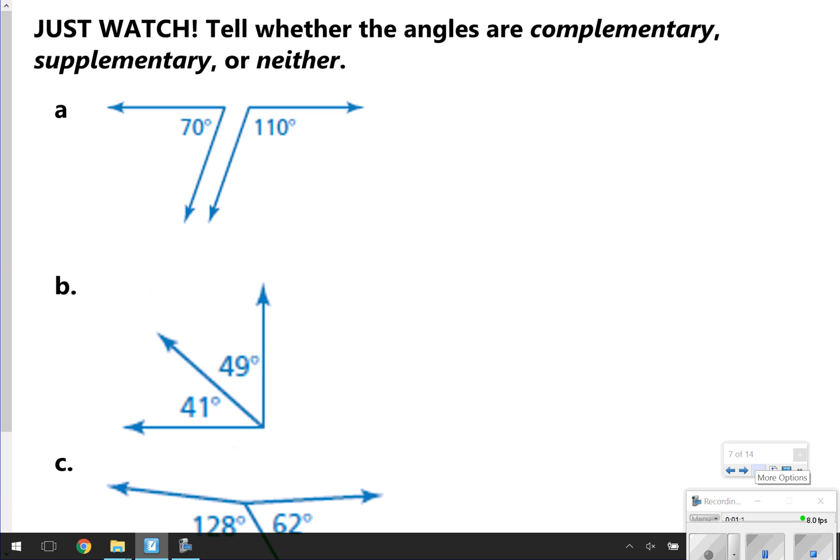Up next, we have just ways that you can figure out if something is Complementary, Supplementary, or Neither. Remember, Complementary equals 90 degrees, and Supplementary should equal 180 degrees. If they don't equal either one of those, then you're just going to write Neither. You're just going to watch for this one, so don't write anything down. Letter A says we have a 70 degree angle and a 110 angle. If I add these two angles together, I get 180 degrees. This means this is a Supplementary Angle.